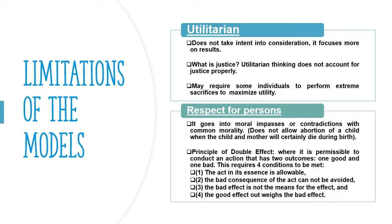On the other hand, the respect for persons approach struggles with contradictions. One example is abortion — RFP does not allow abortion in cases where both the mother and child would die. This is mainly due to the principle of double effect. The principle of double effect allows actions that carry two outcomes — a good and a bad — yet the action must meet four conditions: first, the act in its essence is allowable; second, the bad consequence cannot be avoided; third, the bad effect is not the means to the good effect; and fourth, the good effect outweighs the bad effect. Condition three will not allow the abortion of an individual — the baby — for another individual to live — the mother.